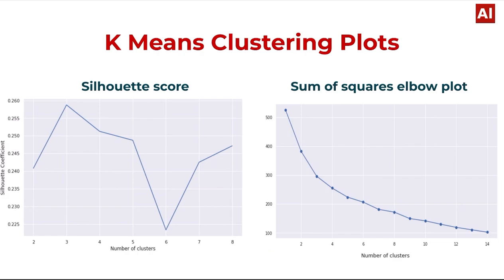K-Means clustering: For K-Means clustering we have the silhouette score and elbow plot. The first chart represents silhouette coefficient versus number of clusters — six clusters has the lowest silhouette coefficient, while three clusters has the highest. The elbow plot also shows number of clusters versus silhouette coefficient.